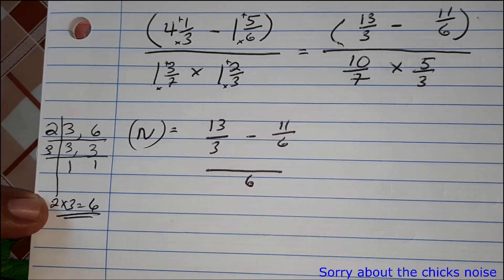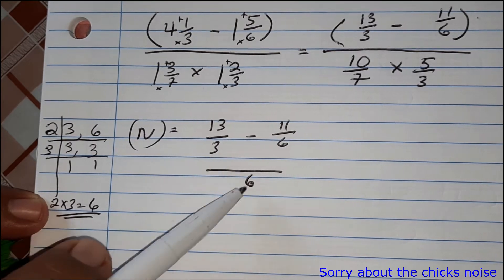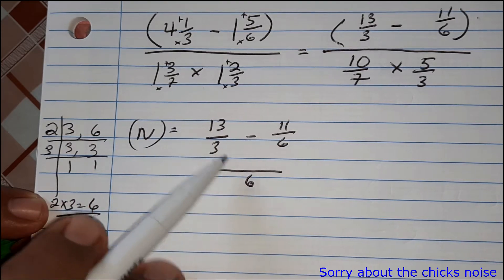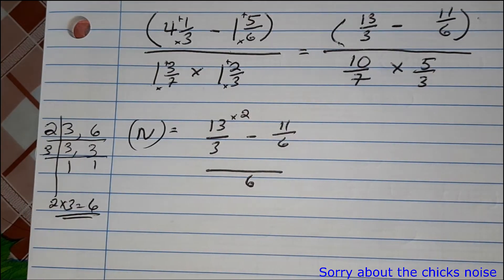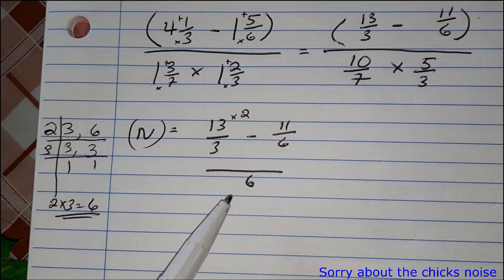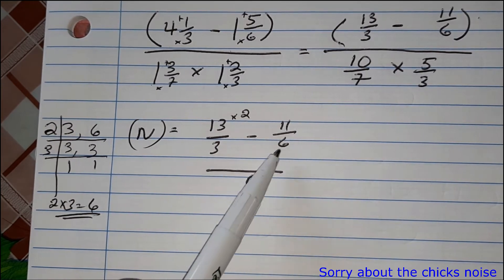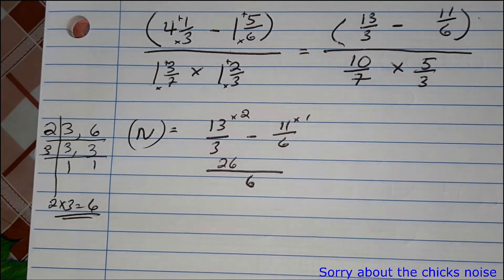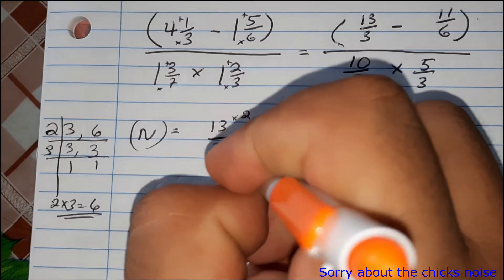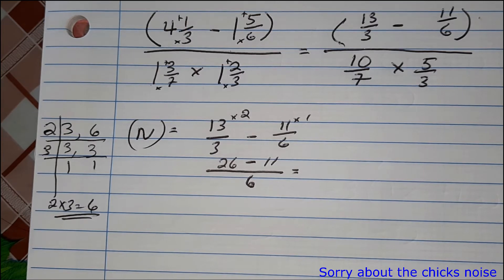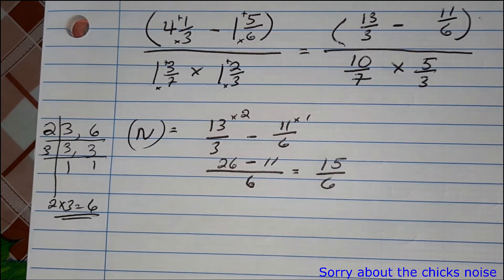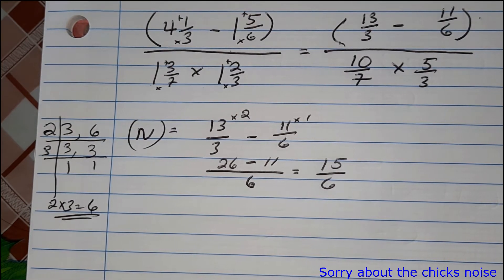Our LCM is six. Divide six by the denominator three: six divided by three is two, then multiply the numerator: thirteen times two gives twenty-six. For the other fraction, six divided by six is one, so eleven times one is eleven. We have twenty-six minus eleven, which gives fifteen over six.